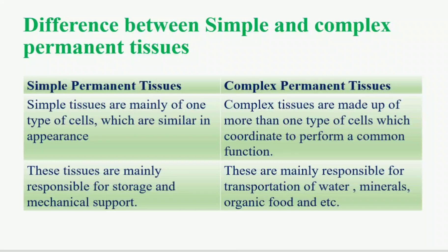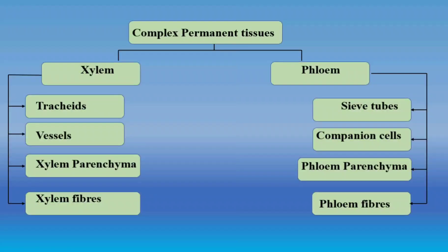Examples of simple permanent tissues include parenchyma, sclerenchyma, and collenchyma. Examples of complex permanent tissues include xylem and phloem. Let's now move on to the classification of complex tissues.